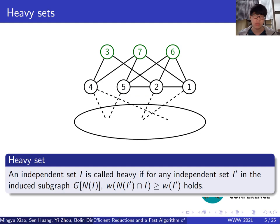Let us talk about the reductions now. For example, the first one is heavy set. An independent set is called heavy if there is no other independent set satisfying the condition here. As you see in this figure, the set of vertices colored by green is a heavy set.